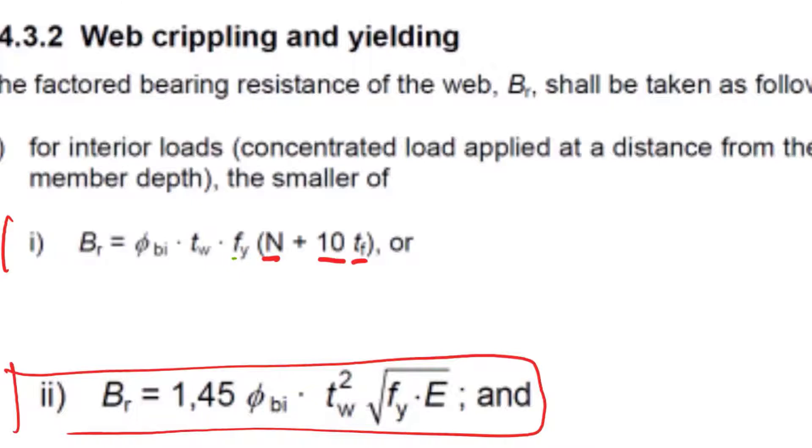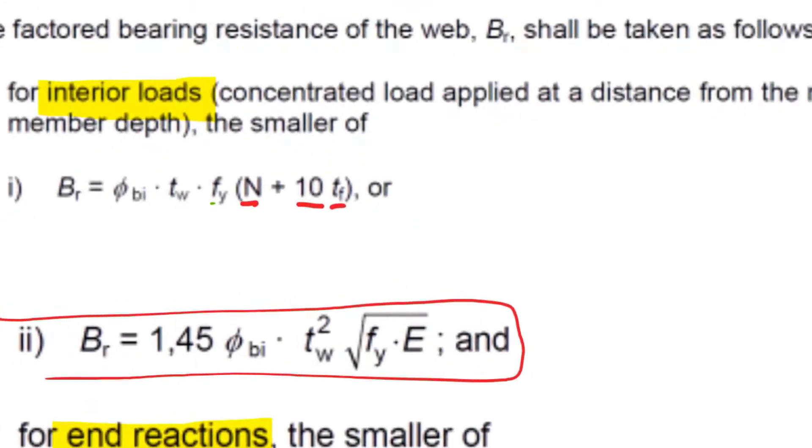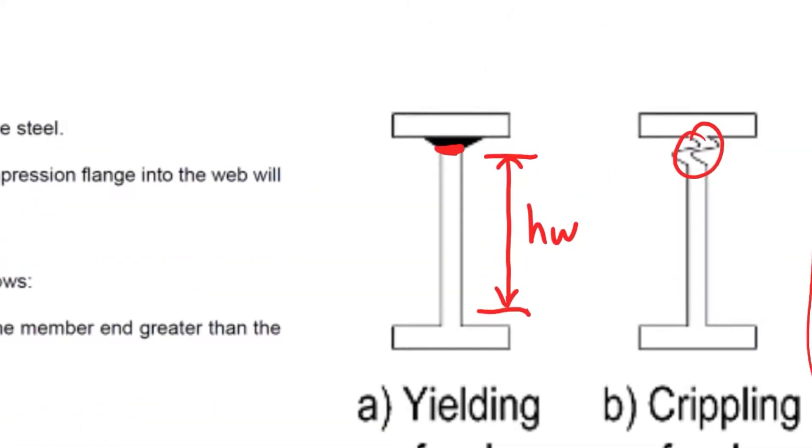Then we have crippling resistance. The form of this equation is a typical buckling type equation - it takes into account the yield stress, Young's modulus, and the square root of both times the thickness of web squared. You don't see a length appear; it's purely based upon the thickness of the web: 1.45 times phi bi times tw squared times square root of fy over E.